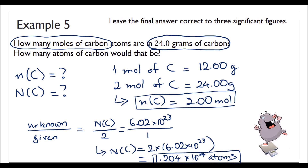This example illustrates that if you have the mass of one mole, you can go from the mass of carbon to the number of carbon atoms. If I have 24 grams of carbon, I can calculate exactly how many atoms of carbon are in it. Once we use the mole concept, you can really go from mass to the number of atoms.